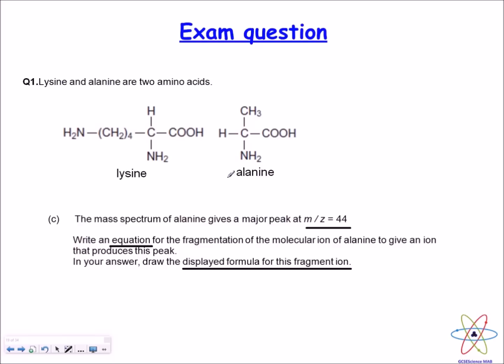What you'll notice is that I've highlighted all the key points in the question. The fragment that you're focusing on has to have a mass-to-charge ratio of 44. You need to write an equation, and in your answer, you have to show the displayed formula for this fragment ion, which has a mass-to-charge ratio of 44. It's just a simple case of experimenting with different sites of cleavage and figuring out if there are any molecular fragments which have a mass-to-charge ratio of 44.